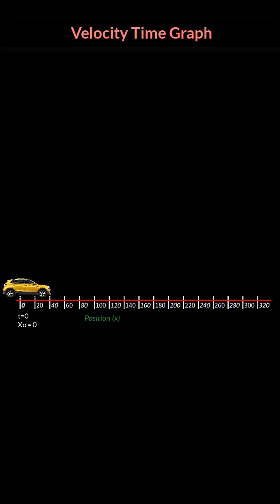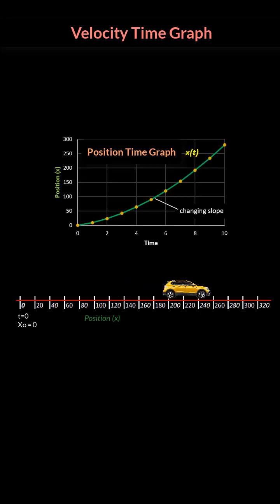Let's say you are moving in a car and your position-time graph looks something like this. You are starting at position x0 at time t equal to 0.